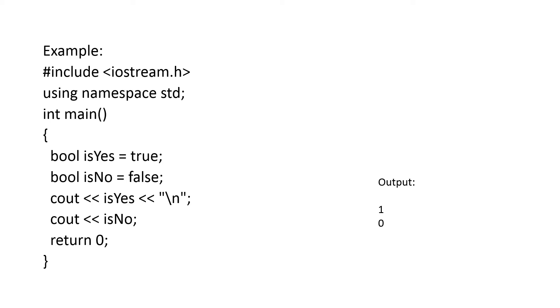Here is an example. #include iostream, using namespace std, int main. bool isYes is equal to true and bool isNo is equal to false. You have just declared two booleans. isYes is a variable and isNo. True is assigned and false is assigned. And cout isYes.